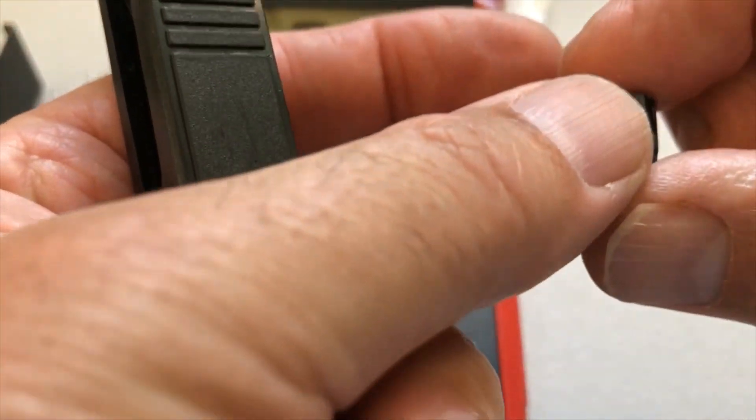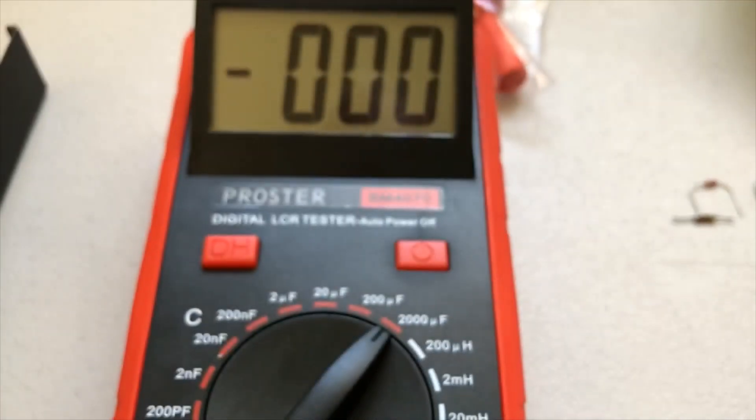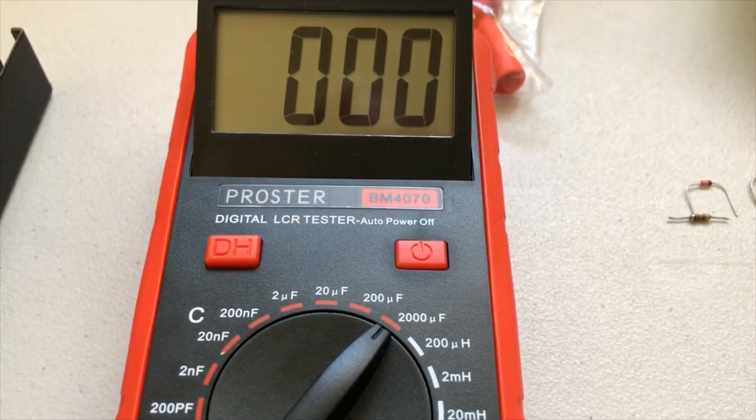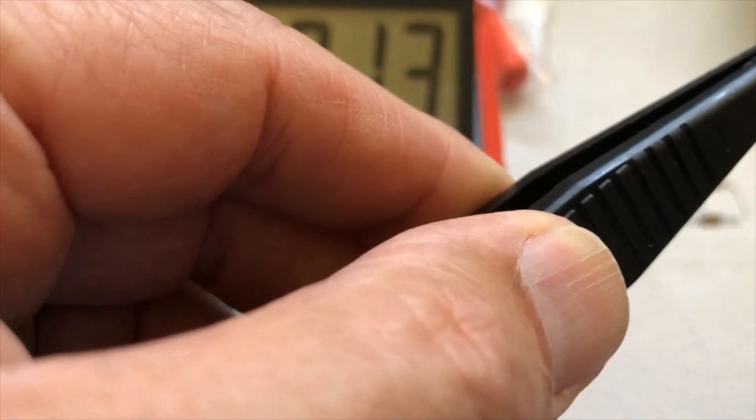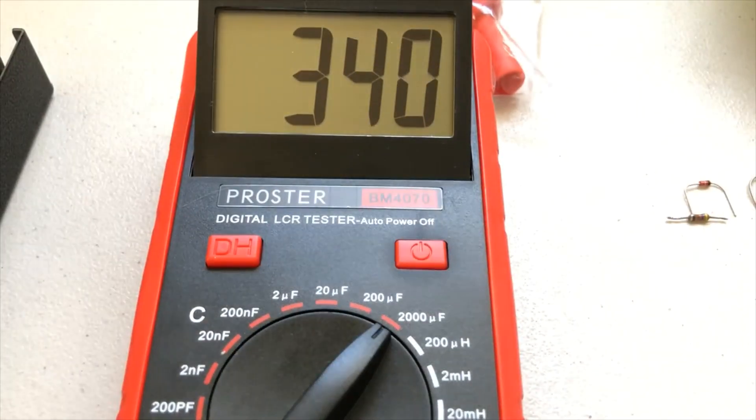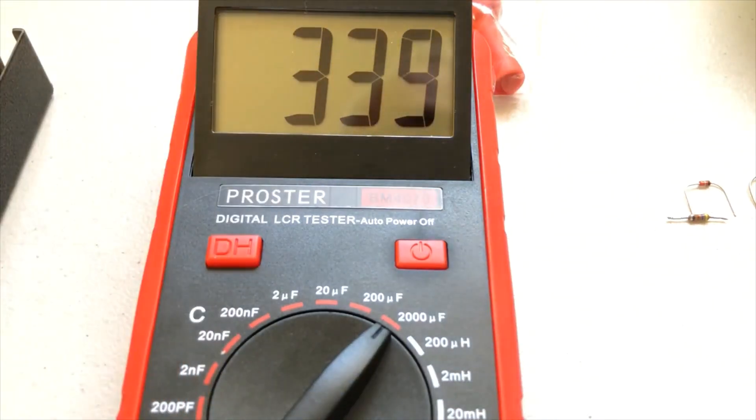Alright, let's look at our next one. We have 330. So it's going to fall between 200 and 2000. Same thing, let's get our negative, put it in there. And we are at 340, right around 340, which is totally acceptable.